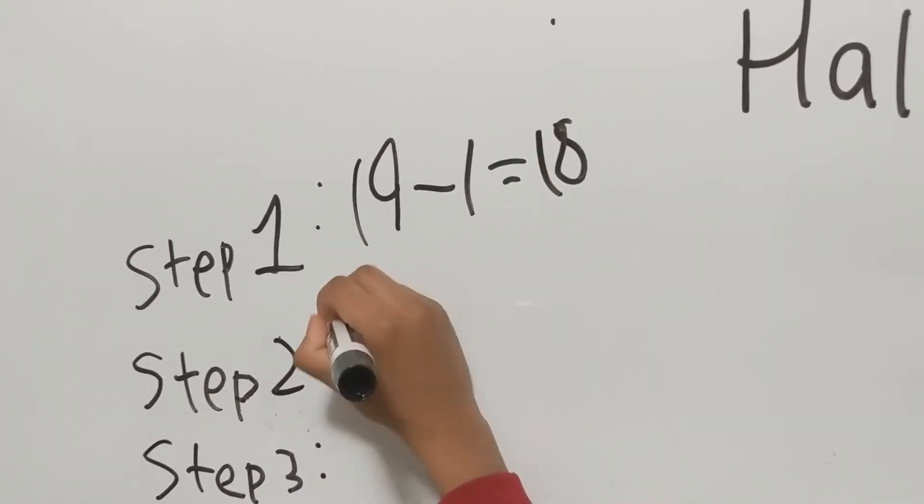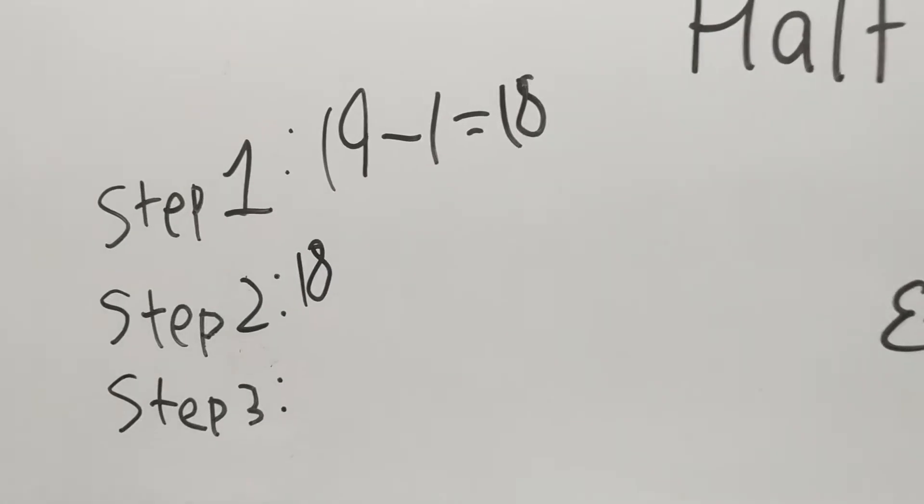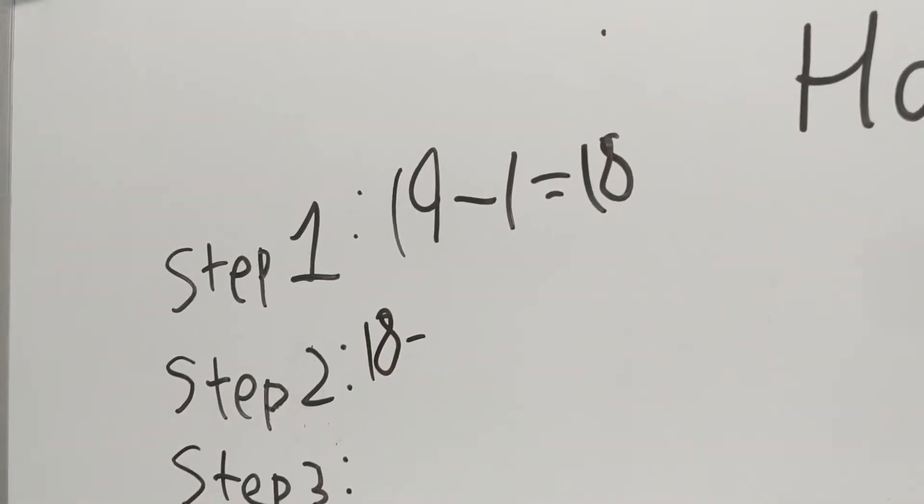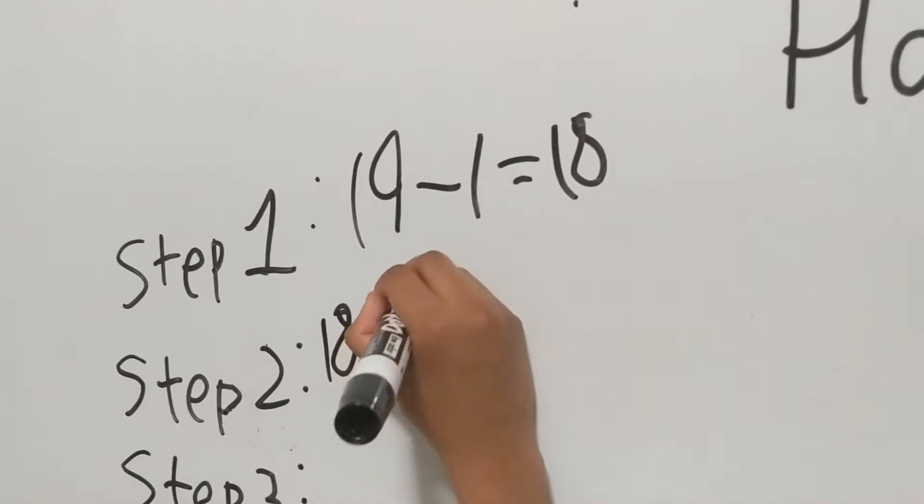Now we're going to take 18 right here. How is 18 created? It is created by 9.